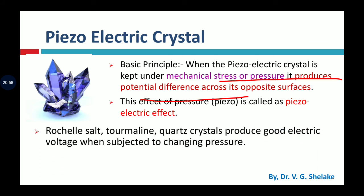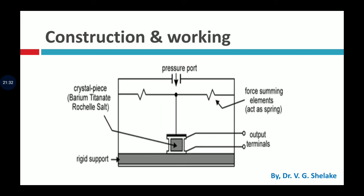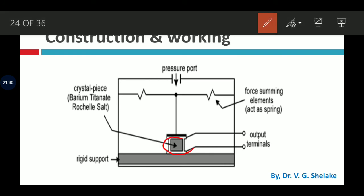Materials that show the piezoelectric property include Rochelle salt, tourmaline, and quartz crystal — these produce a good electric voltage when subjected to changing pressure. There is no need for an external battery or supply for its operation, hence it is called an active transducer. It generates its own energy — when pressure is applied, a voltage is generated, meaning one form of energy (pressure) is directly converted into voltage without any external supply.